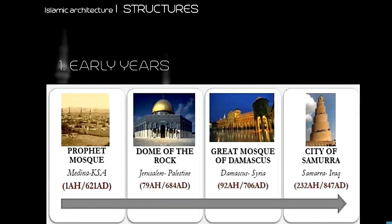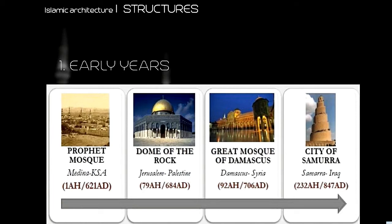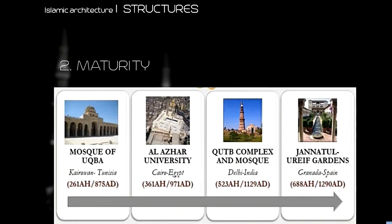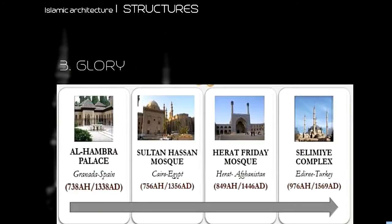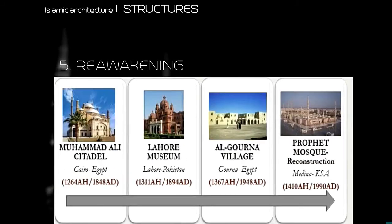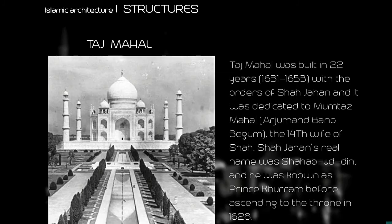The early years of Muslim architectural styles led to the glorious period of Islamic art, followed by a period of passiveness, then a reawakening. The Taj Mahal represents the most splendid architectural style in the Islamic world.